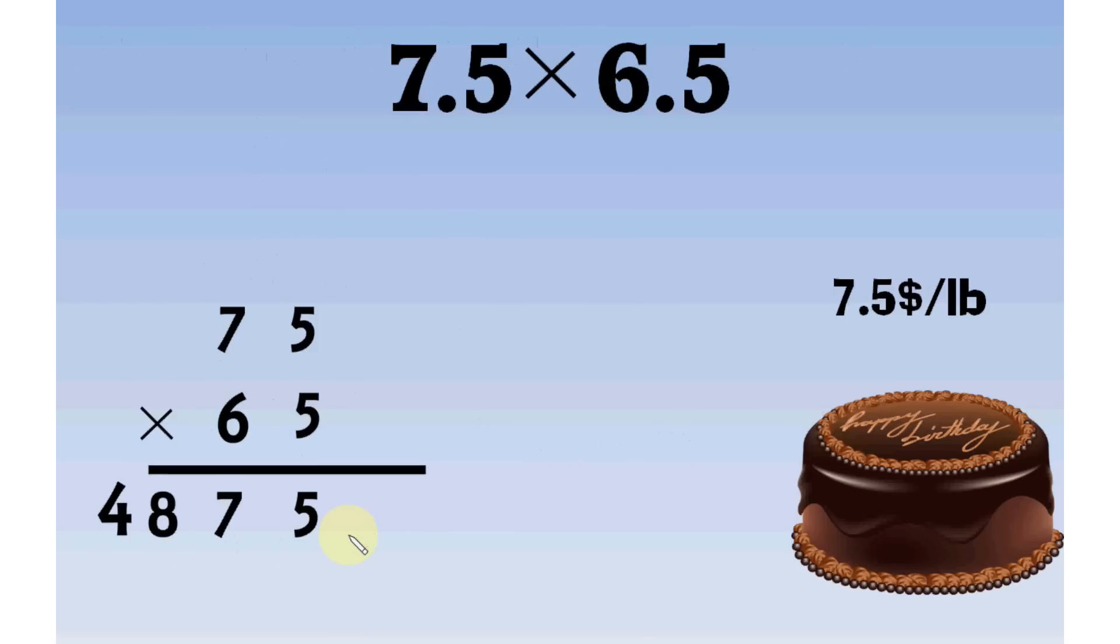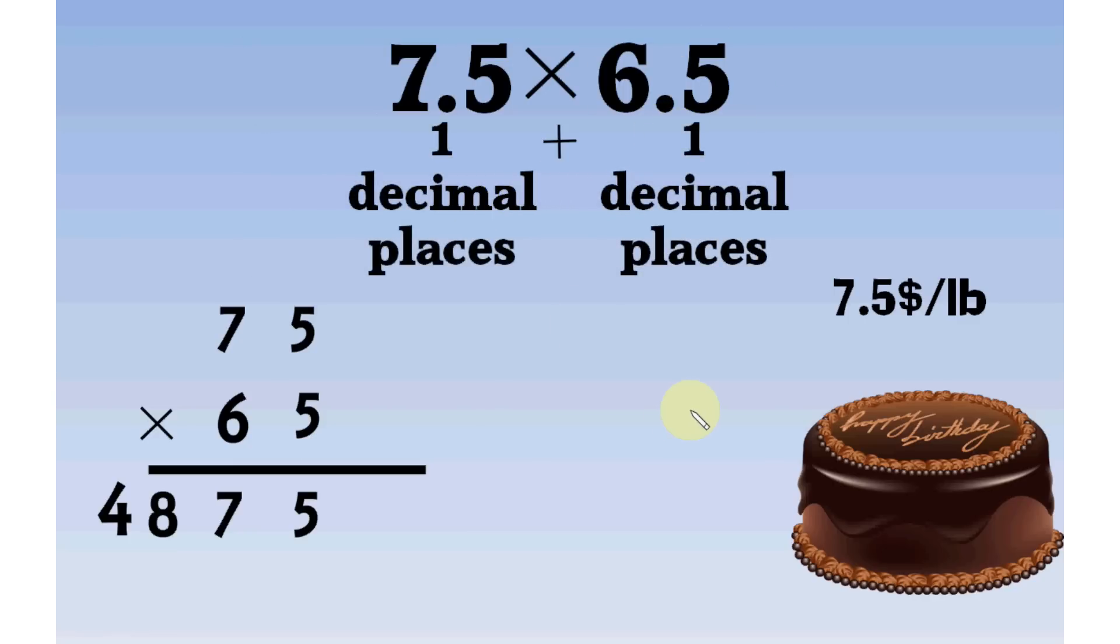Now, where would the decimal go? Look, in 7.5, we have 1 decimal place. In 6.5, we have 1 decimal place. So, total 2 decimal places. Means, the final product would have 2 decimal places.